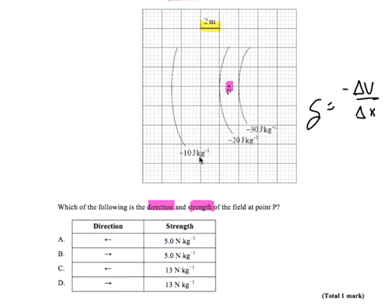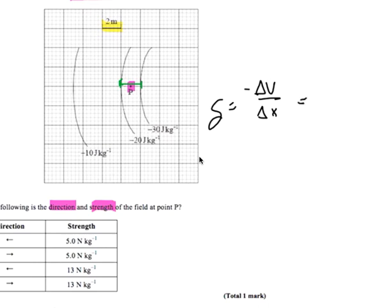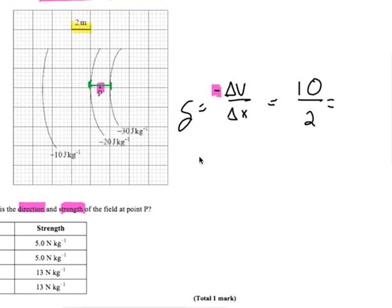When we look across the gap between the potentials, we know the potential on each of these two curves. The change in potential from negative 30 to negative 20 is 10. We're not going to worry about the negative sign because it just asks for the strength of the field, not the direction — we just want the magnitude. So the difference between the potentials is 10 joules per kilogram, and the change in position between those potentials is the physical distance highlighted in yellow — it's 2 meters. So we're looking at 5 newtons per kilogram.